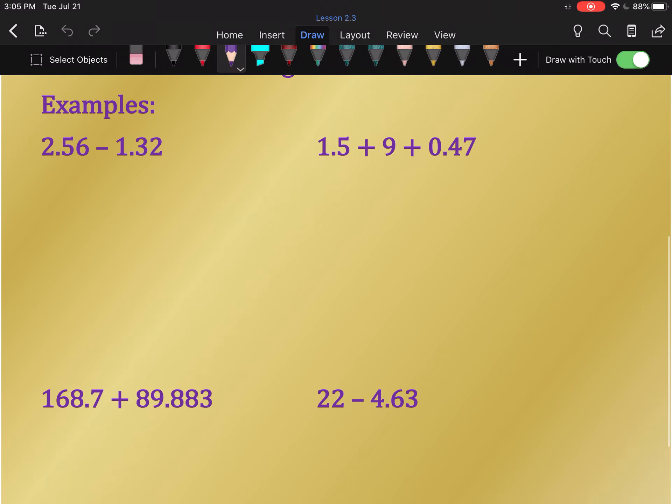So let me show you some examples. Our first example is subtraction, and these decimals are the same length. They both have two places. So we can write this vertically: it's 2.56 minus 1.32. Just drop the decimal point and treat this like normal subtraction. 6 minus 2 is 4, 5 minus 3 is 2, 2 minus 1 is 1. It's 1.24.